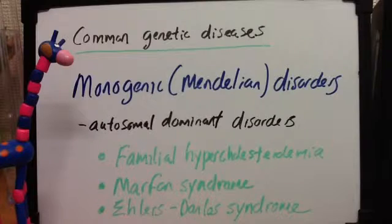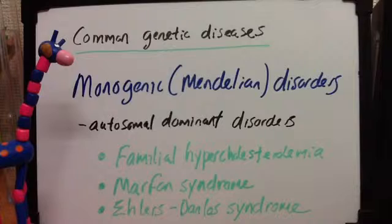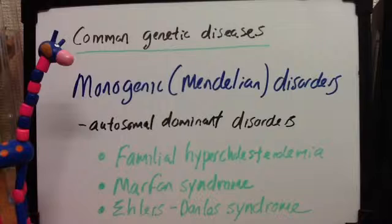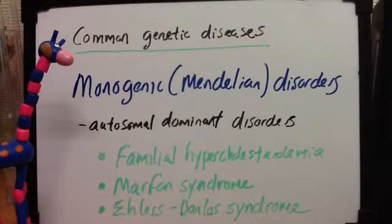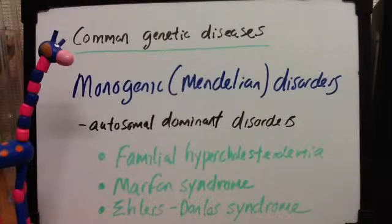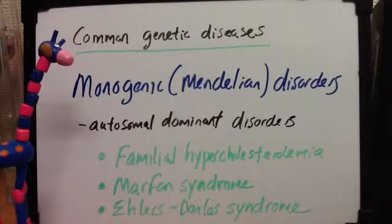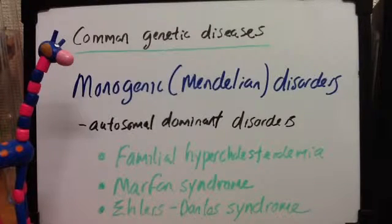Heterozygotes are asymptomatic until adulthood, and then you would see xanthomas along the tendon sheaths or the coronary arteries. Xanthomas are a deposit of fat under the skin. For homozygotes, you'd have xanthomas in childhood and death due to MI by the age of 15 years — so a very serious disease.